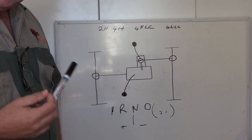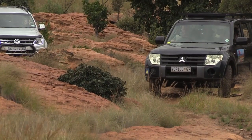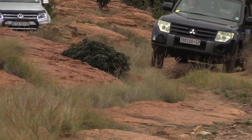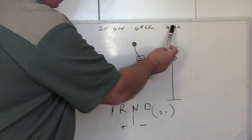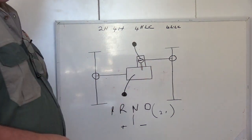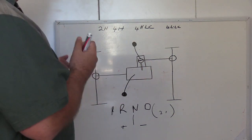And then four low is basically the same as four high, it's just the change of the ratio to give you more power and less speed.